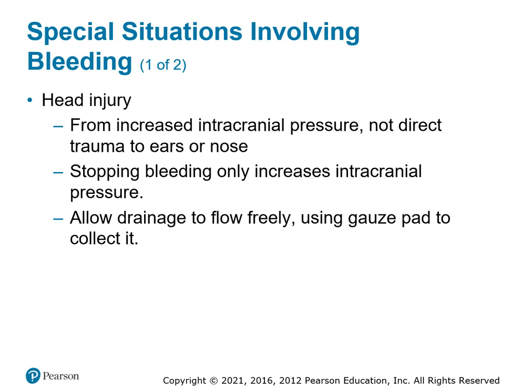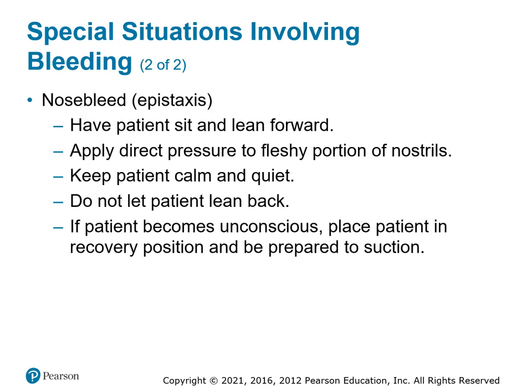For head injuries, do not try to stop bleeding from an internal source — it actually helps the brain by relieving intracranial pressure. For external bleeding on the surface of the skull, attempt to stop it. For nosebleeds (epistaxis), have the patient sit up and lean forward — never lean them back because blood flowing into the throat causes airway obstruction. Squeeze the nose, lean them forward, and keep them calm. If they become unresponsive, place them in recovery position. Rhino rockets — small nasal tampons, some impregnated with QuikClot — can be inserted to stop nasal bleeding.